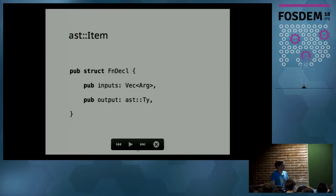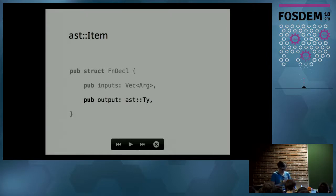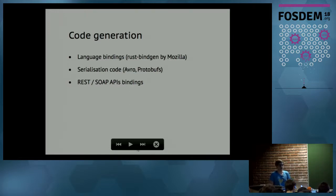It could look like a function declaration which has its inputs, its arguments together with their types, and also an output type. It goes on like that with other kinds of AST items — it's not rocket science. You can basically continue in the same manner.